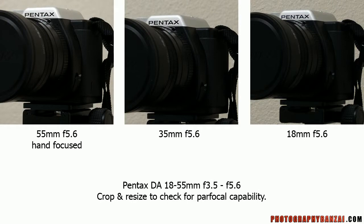Here is the 18 to 55 millimeter lens — same test. With this lens it's a little bit easier to see differences because you can zoom in. At 55 millimeter f5.6, that's where I focused. But then at 35 millimeter you can see the Pentax text is not as sharp. However, the SMC Pentax text in front of it is sharper, which would indicate a focus shift, because the Pentax text is not as sharp.